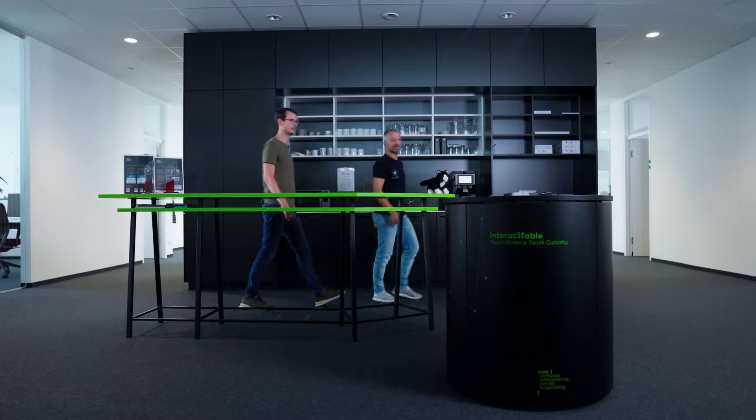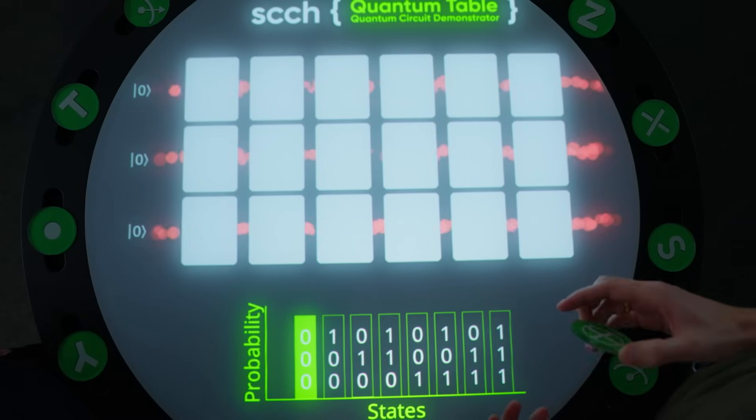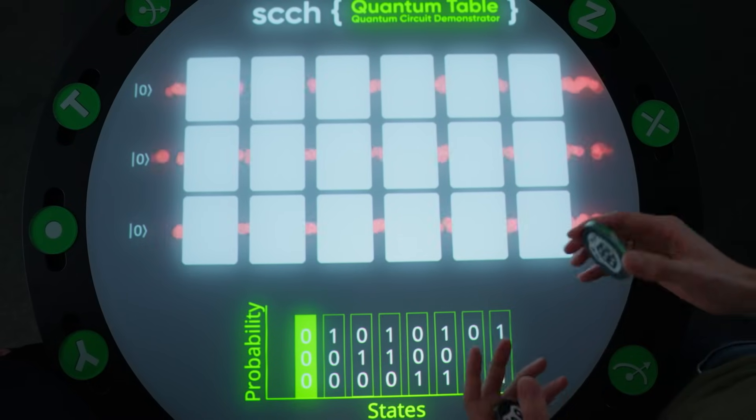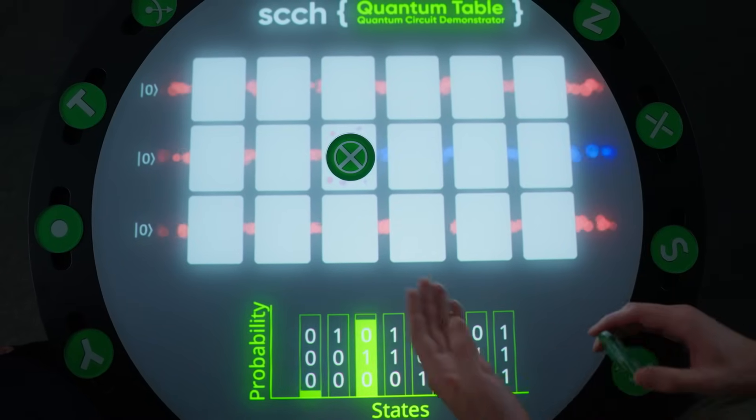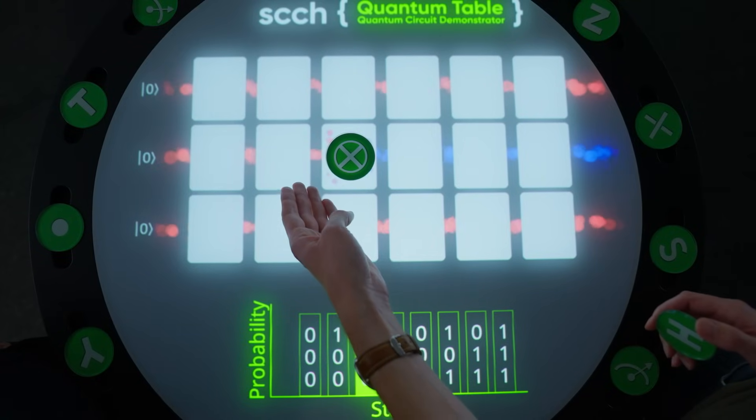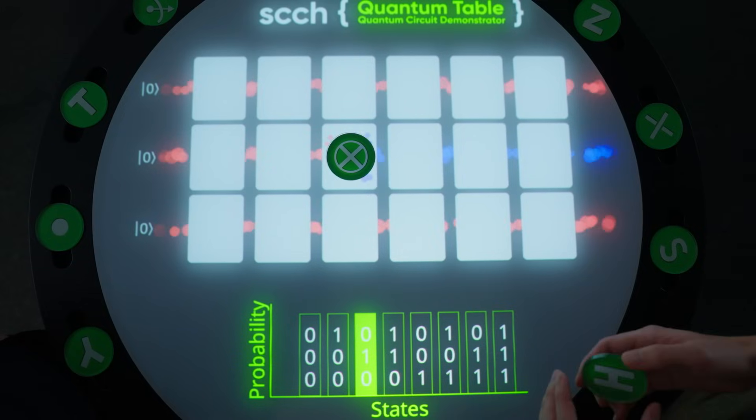Ah, so there we are. So this is the magic demonstrator, Stefan. Exactly. What do we see here? So this is our way to visualize what happens in a quantum computation. For quantum computing, you can see the silhouette of a quantum circuit. And now I can place individual operations on here. Here you can see how the zero in red is turned into a one in blue. And this is what you would do classically as well.